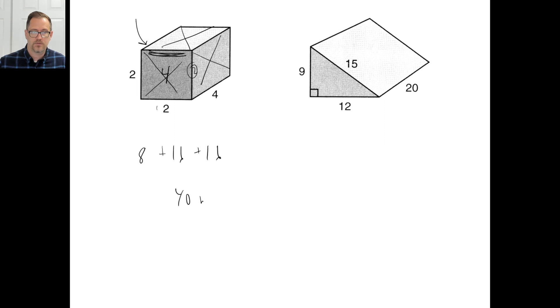So you got 40 total. 40 something. I don't know. Let's say it's miles squared. There you go. Okay. Try B. See what you get.